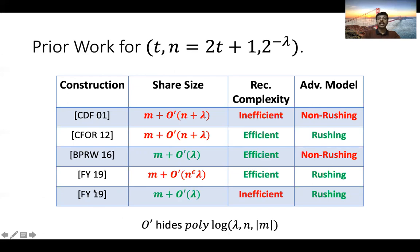Last year, Fehr and Yuan gave two constructions. The first had share size M + O'(N^epsilon * lambda) for arbitrarily small constant epsilon, with efficient reconstruction proven secure against rushing adversaries. They also gave a second construction with near-optimal share size and security against rushing adversaries, but reconstruction was slightly super-polynomial. The open problem from this line of work is to get a construction with near-optimal share size, efficient reconstruction, and security against rushing adversaries.